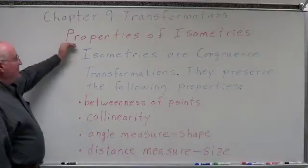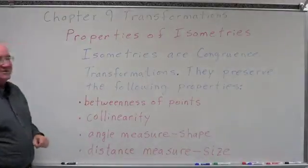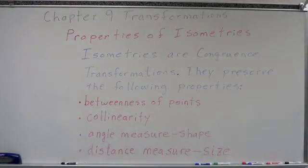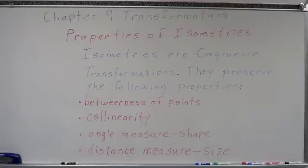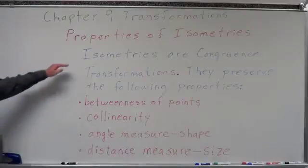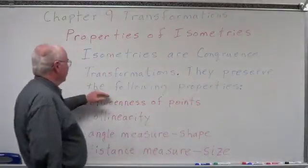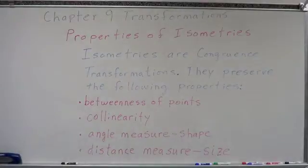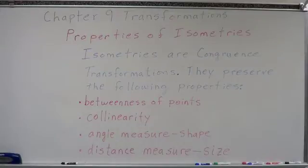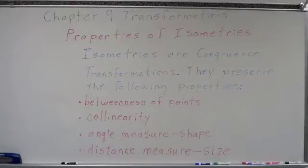So, properties of isometries: isometries are congruence transformations, meaning the image is congruent to the pre-image — what we do to the figure results in the same size and shape as what we started with. They preserve the following properties: betweenness of points, meaning if a point is between two other points, it will remain there, and the position of points remains the same. They also preserve collinearity — if points are on the same line, they remain on the same line.